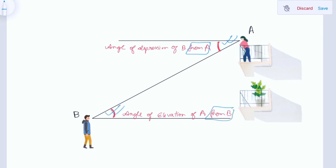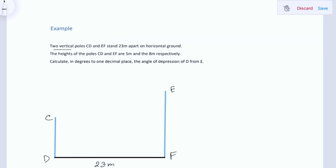So let us solve an example. Two vertical poles CD and EF stand 23 meters apart on horizontal ground, as shown in this diagram. The heights of poles CD and EF are 5 meters and 8 meters respectively.